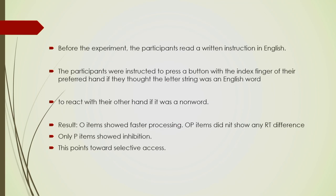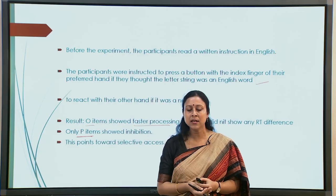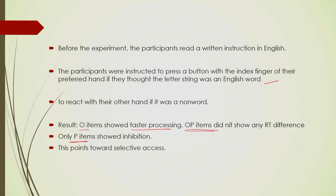The entire task was done in English. Results showed that orthographic overlap led to faster processing — facilitation. When there was overlap on both orthography and phonology, items showed no reaction time difference. Only phonologically similar items showed inhibition. Overall, the authors claimed this showed selective access, because phonological representation works at a very different level.